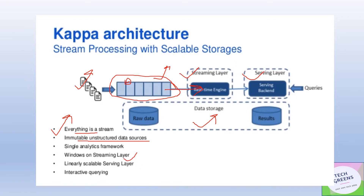Window functions can be employed on the streaming layer — you can take a stream for a specific amount of time, like 30 seconds or 20 seconds, or by size, process it, and produce a compute view. This architecture makes it linearly scalable because there is no separate parallel batch layer; if you want to scale horizontally, you can do that.